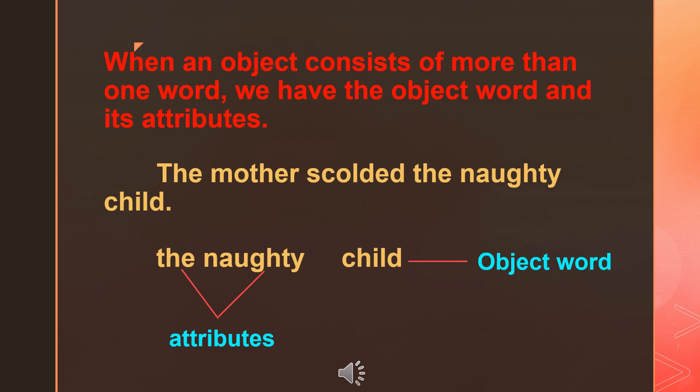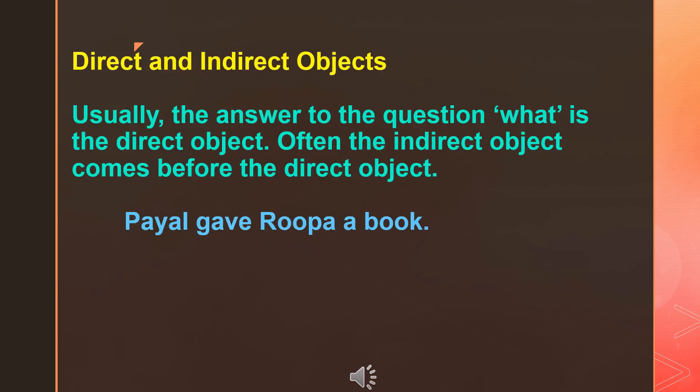For an example: the mother called the naughty child. In this sentence, the mother is the subject, called is the verb, and the naughty child is the object. Now, taking the object the naughty child, we can divide it into two parts: child is the object word, and the naughty are its attributes.